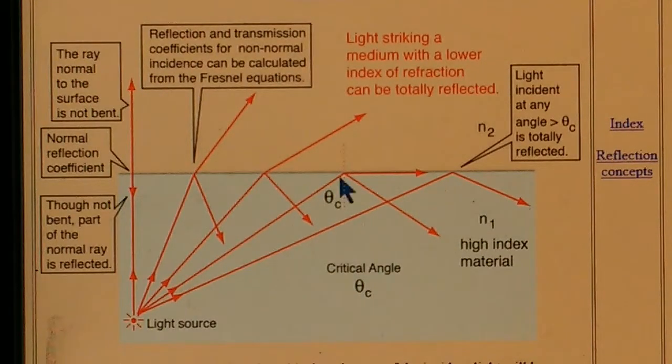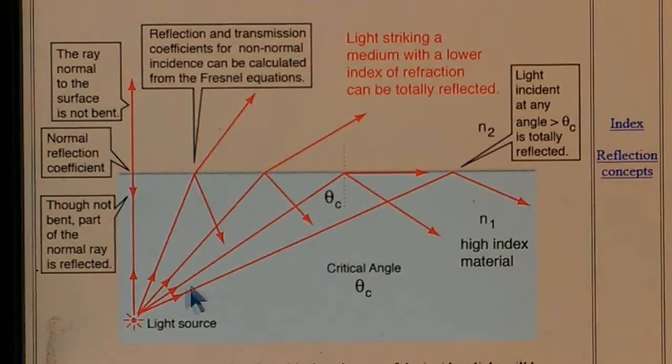The light is bent more and more until we hit this. The critical angle at this incident angle, our formula results in 90 degrees. That is the critical angle.